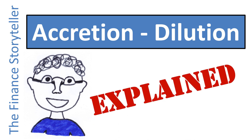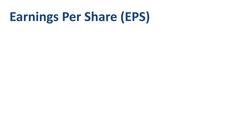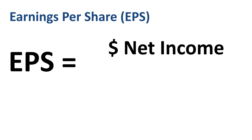What is the meaning of accretion and dilution? Corporate executives often talk about accretion and dilution when explaining their capital allocation strategies to investors: 'We identify and pursue accretive M&A opportunities,' or when an actual merger or acquisition is announced, 'The transaction is expected to be dilutive this year, and accretive thereafter.' What these executives refer to is the effect on a financial metric called earnings per share, or EPS, which is simply the net income generated by a company divided by the number of its outstanding shares.